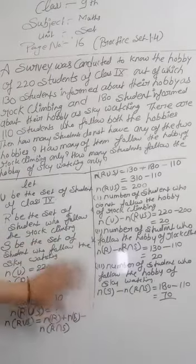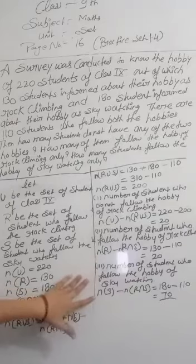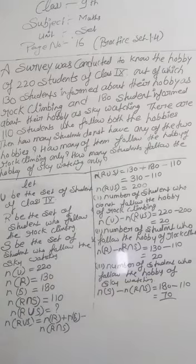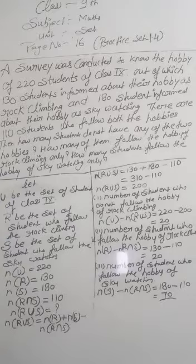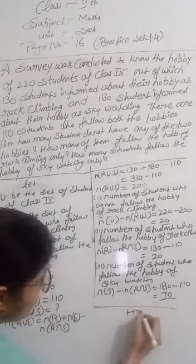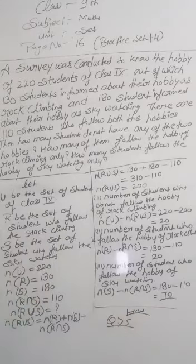You can write these questions in your notebook. Question number 5 is your homework: observe the given Venn diagram and write the following sets — set A, set B, and A union B. The Venn diagram is given and you have to write the sets. Question number 5 is your homework. Thank you.